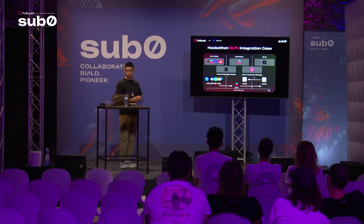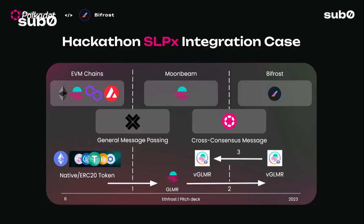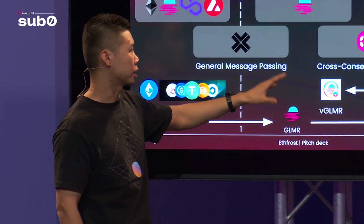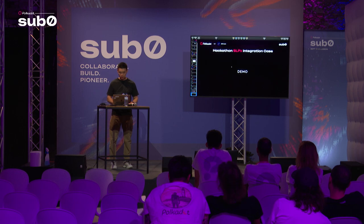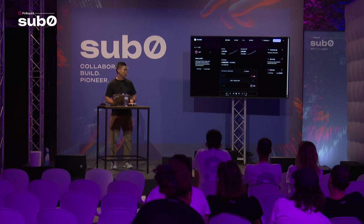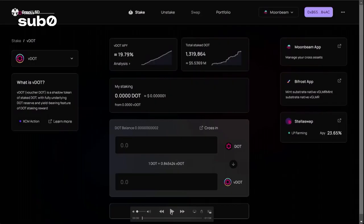The Hakusong team built something interesting on the SLPX contract using a bridge called Squid. It can easily swap any ERC-20 token from Polygon, Moonbeam, Avalanche, or Ethereum — directly via the bridge to Glimmer. Glimmer can then be minted to vGlimmer on Bifrost via XCM. We also have a frontend interface for SLPX deployed on Ethereum, Moonbeam, and Filecoin — meaning you can mint any liquid staking token on any chain.